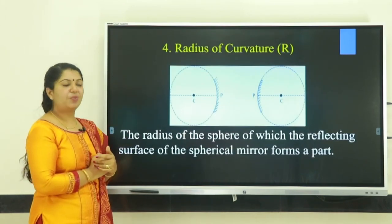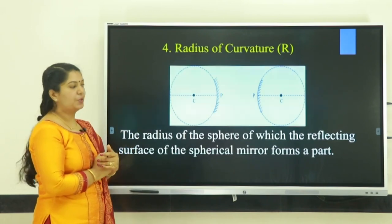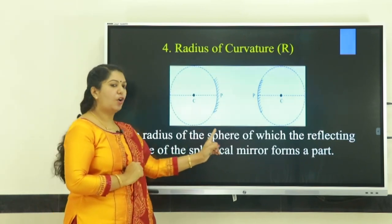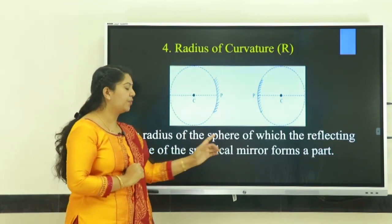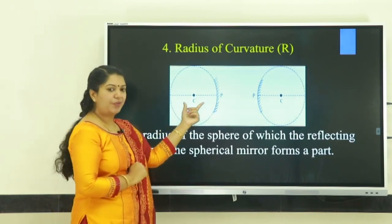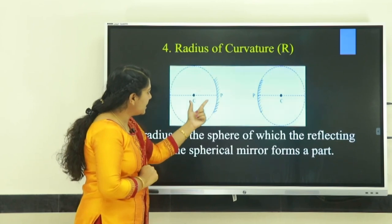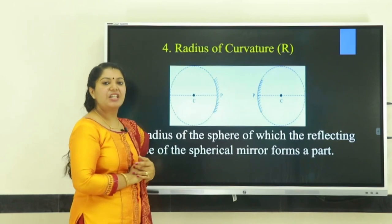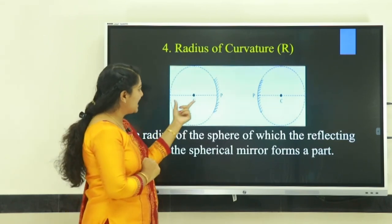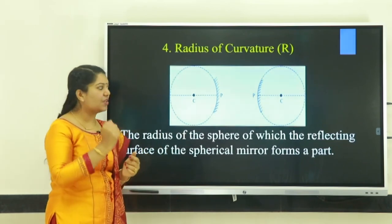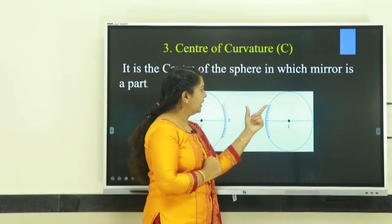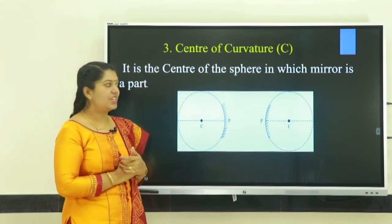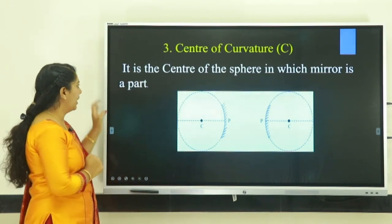Fourth term: radius of curvature, represented by the letter R. The radius of curvature is the radius of the sphere of which the reflecting surface of the spherical mirror forms a part. In this figure, for a concave mirror, the distance from pole P to center C represents the radius of curvature. In a convex mirror also, the distance from pole to center of curvature is called the radius of curvature.